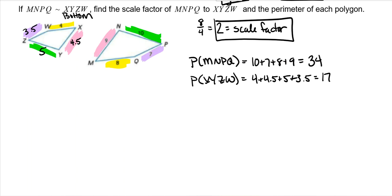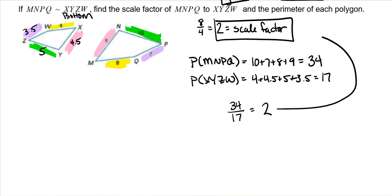Here's something cool: if you find the scale factor of the perimeters (34 over 17), it also gives you 2 — the same as the scale factor of the sides. So the perimeter scale factor and the sides scale factor will always be the same.